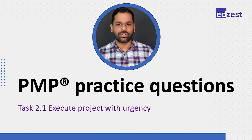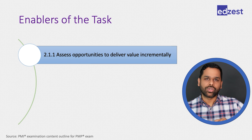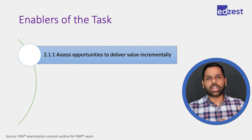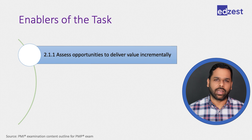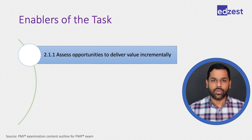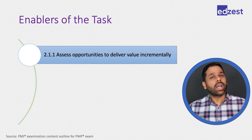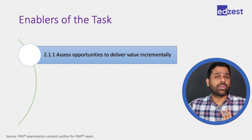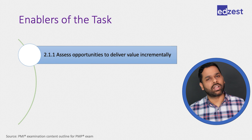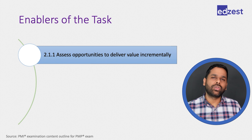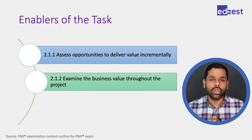For this particular task, the first enabler is to assess the opportunities to deliver value incrementally. We should always try to deliver certain value to the customer as early as possible. Incremental value delivery applies in agile, but also in traditional approaches — we can divide work into different phases so customers can start using it earlier, delivering incremental value through multiple approaches.